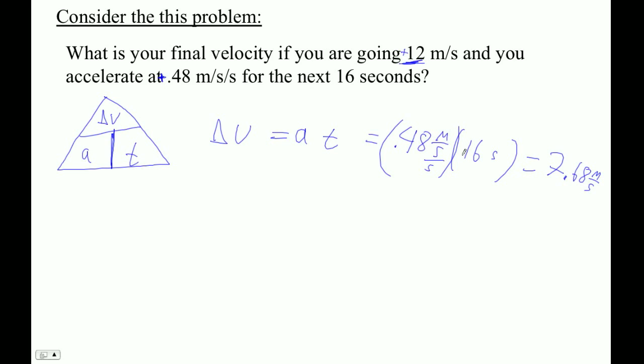Anyway, this is what's going on. What we just did was say that we're gaining 0.48 meters per second every second for 16 seconds. You're then going to gain a total of 7.68 meters per second - you're going that much faster than you were originally.